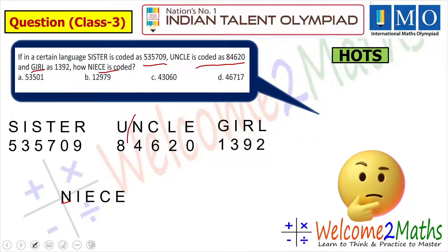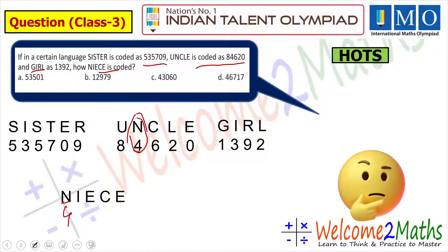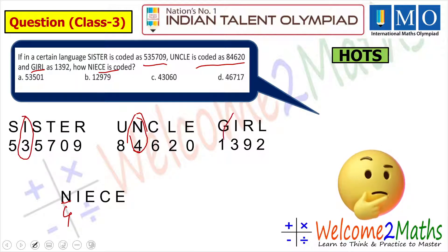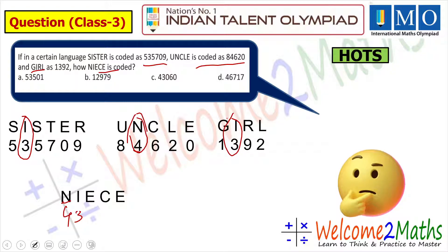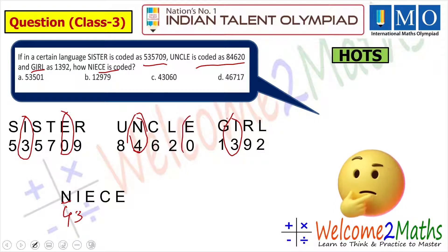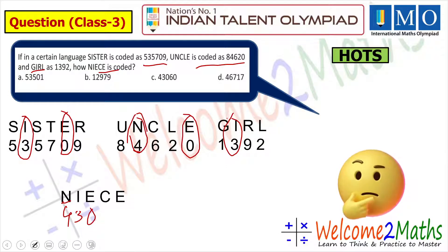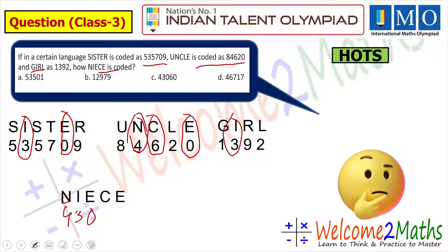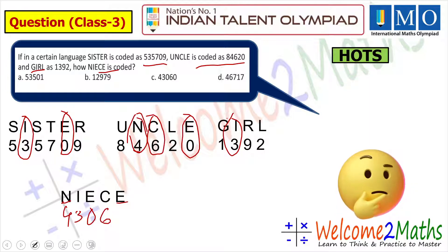From 'uncle' we can find out the value of N is 4. The next letter is I — from 'sister' and 'girl' we find the value of I is 3. The next letter is E — from 'sister' we find the value of E is 0. Wait, let's find C — from 'uncle' the value of C is 6. And the last letter is E again, and the value of E is 0.